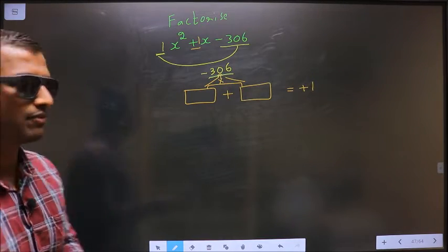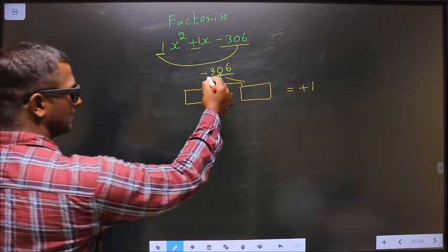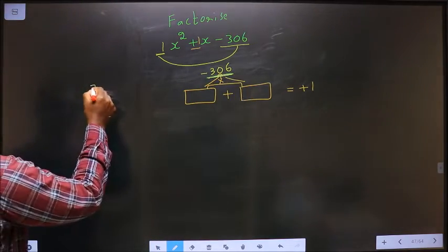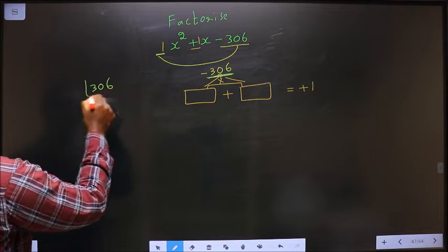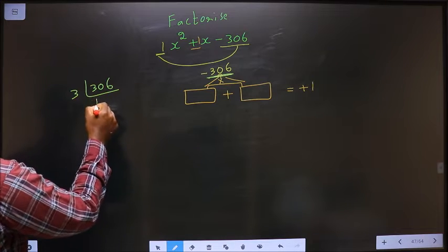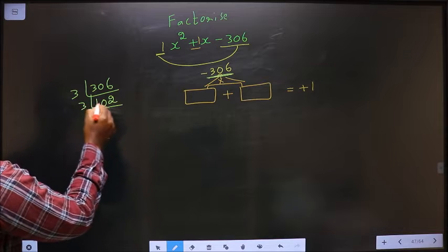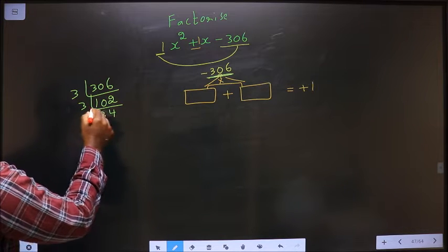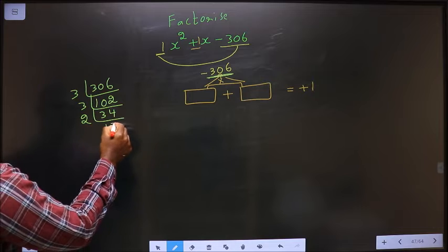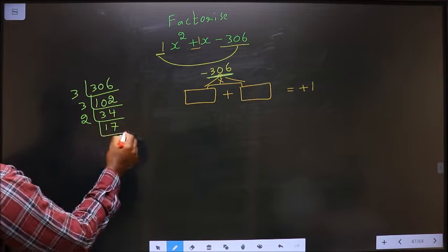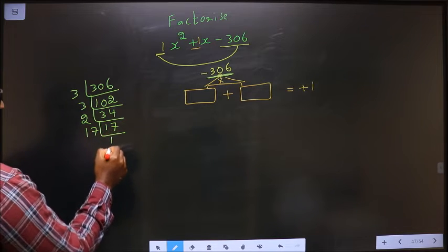To get those two numbers, we take the prime factorization of 306. Start with 3: 306 ÷ 3 = 102. Again 3: 102 ÷ 3 = 34. Now 2: 34 ÷ 2 = 17. Now 17 ÷ 17 = 1.